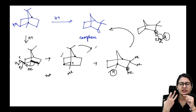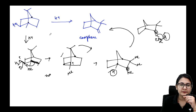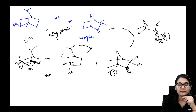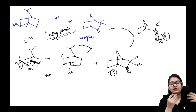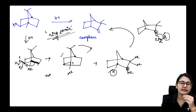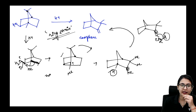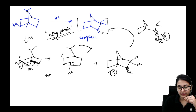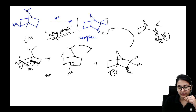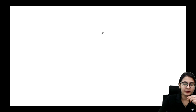You might ask: if there is carbocation rearrangement happening but you are not even getting a more substituted alkene, what is the driving force of this reaction? The driving force is ring strain. Whenever there is ring strain, the ring will always want to rearrange, and there can be more than one rearrangement taking place. The more strained and more substituted carbon gets freed, giving a less strained, better possibility — even if we don't get the most stable product.